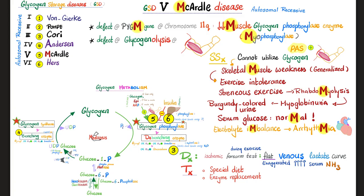Rhabdomyolysis means breakdown of skeletal muscles. When muscles break down, myoglobin is released into the circulation — myoglobinemia — and ends up in the kidney, causing myoglobinuria. It is very toxic to the kidney and shows up as burgundy-colored urine. Serum glucose is normal as long as the liver is healthy, since the muscle is not a source of blood glucose. Electrolyte imbalances can occur, leading to cardiac arrhythmias.